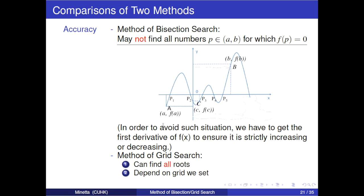In order to avoid such situations, we have to get the first derivative of f(x) to ensure that f(x) is strictly increasing or strictly decreasing. For method of grid search, it can find all roots since we have used all the domain. But the value we get depends on the grid we set. The smaller grid, the more accurate value.